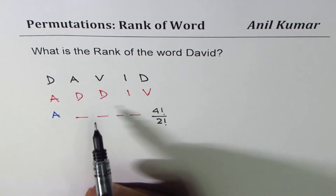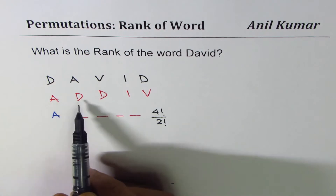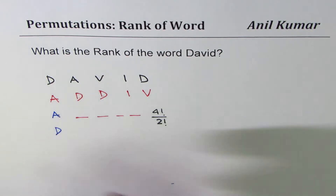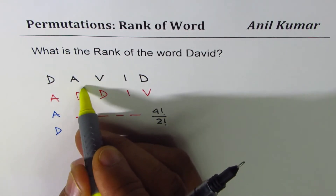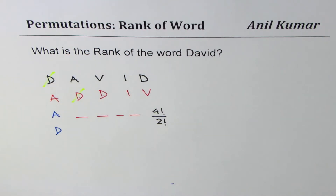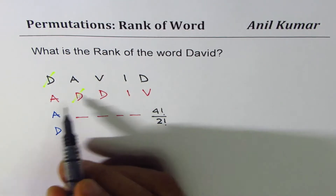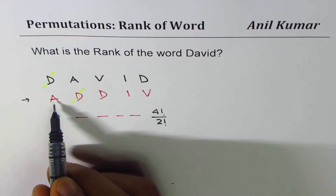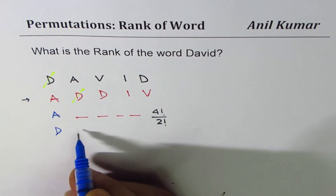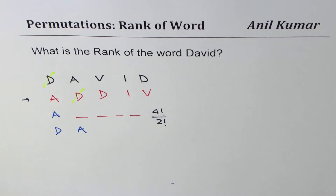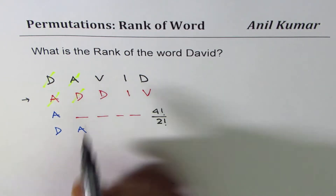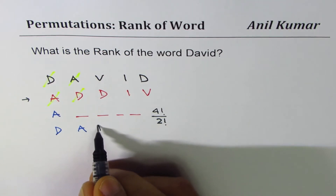The next letter is D, which is what we need — so we cancel this D. We got the first letter matching. Then we start from the leftmost side again: the next letter is A, and A is also there — good, it matches. Then we try the next one: we need V, but D comes next, so D doesn't match.